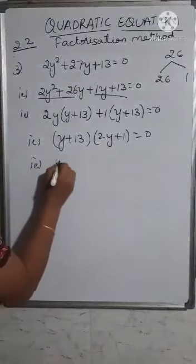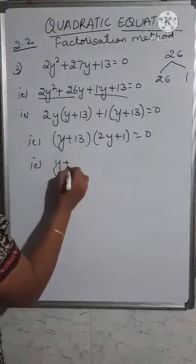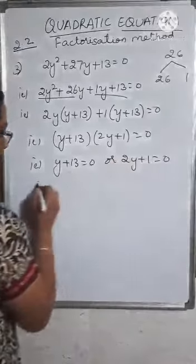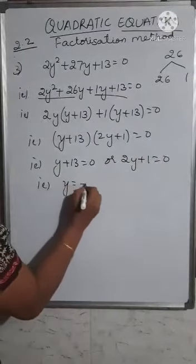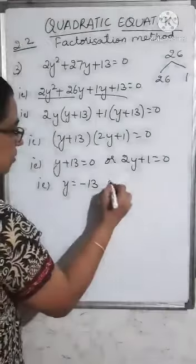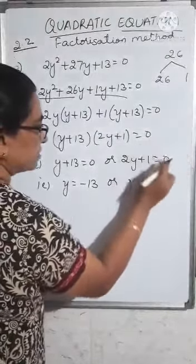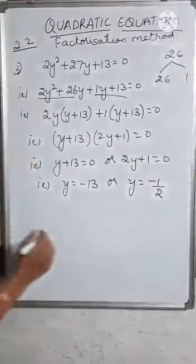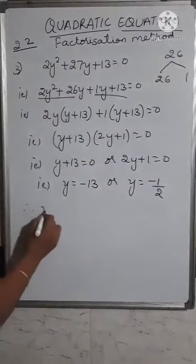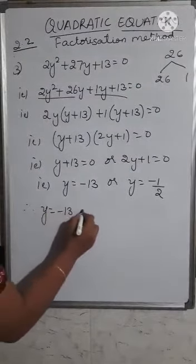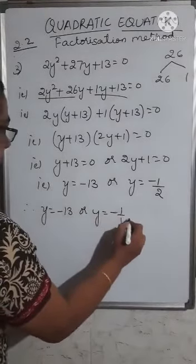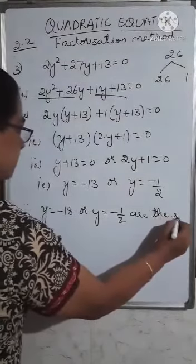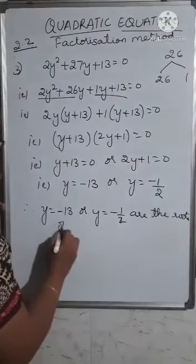This gives (y + 13)(2y + 1) = 0. Equating each factor to 0: y + 13 = 0 gives y = -13, and 2y + 1 = 0 gives y = -1/2. Therefore y = -13 or y = -1/2 are the roots of the equation.